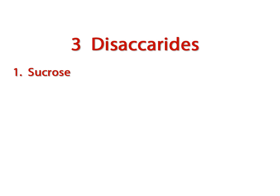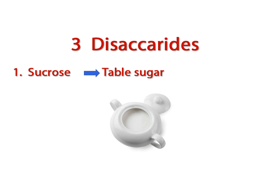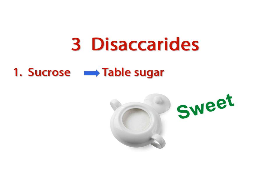The first disaccharide we're going to talk about is sucrose. Sucrose is the scientific name for table sugar. And if I asked you what table sugar tastes like, you would probably tell me it tastes sweet. So it makes sense then that one of the building blocks for sucrose is fructose, the sweetest monosaccharide. And remembering that sucrose is a disaccharide made from two monomers, the other monomer or building block is glucose.